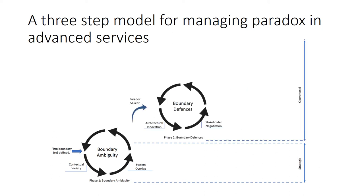Following phase one, the customer had made the efficiency versus flexibility paradox salient. Strategically they had focused on flexibility over efficiency in order to support the client. The provider then focused on boundary defences to support the short-term viability of their system. So we've moved from a strategic to an operational phase.